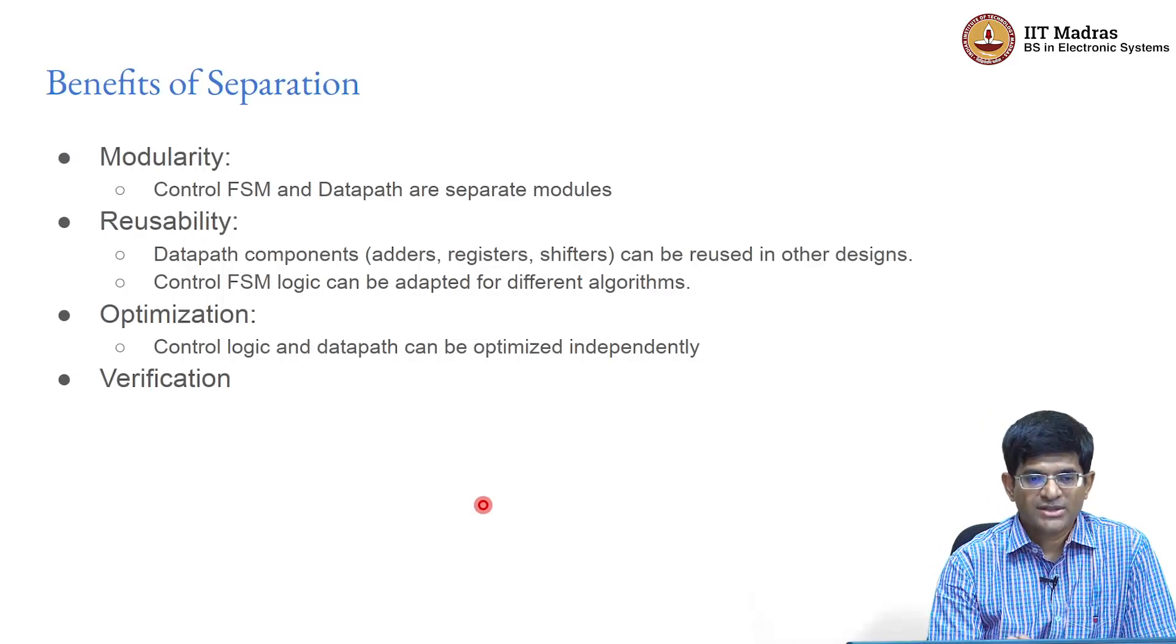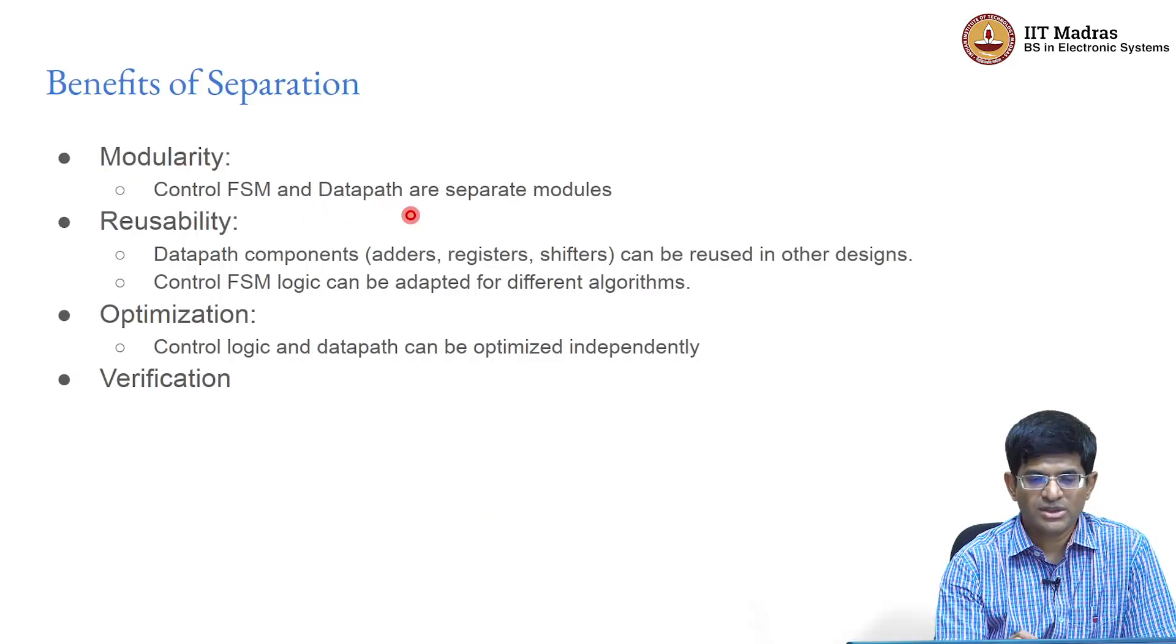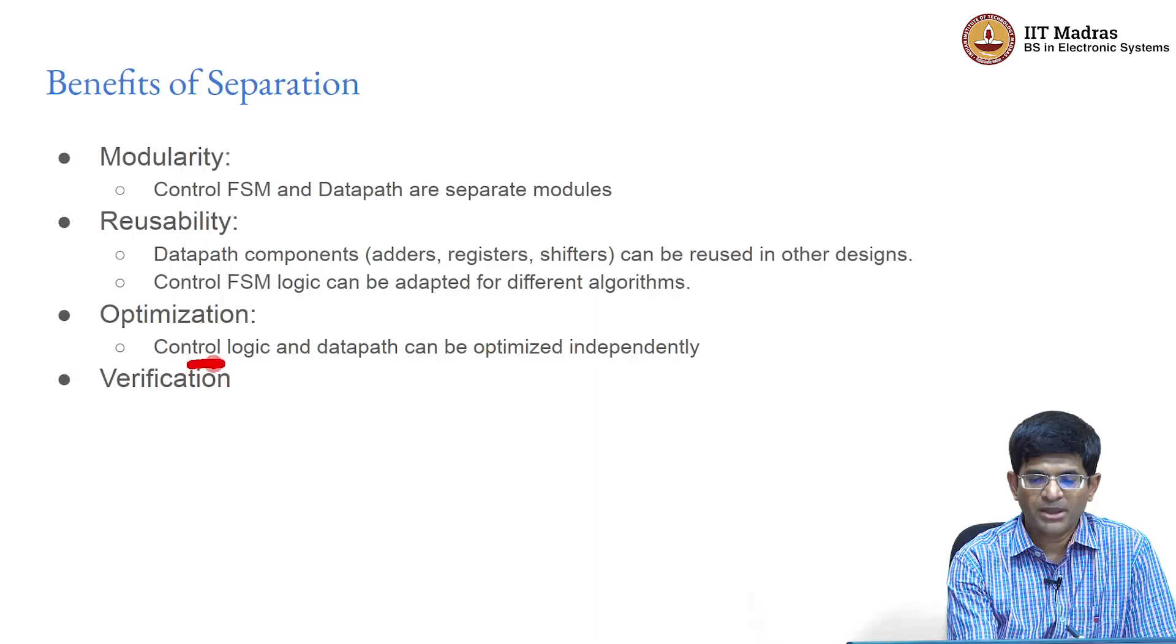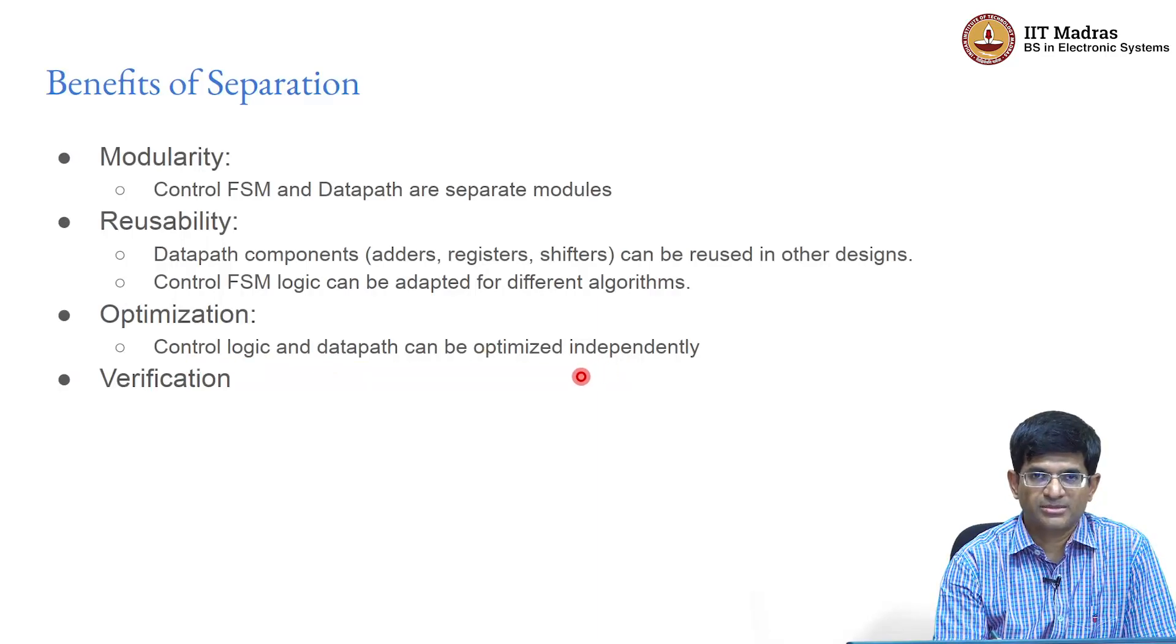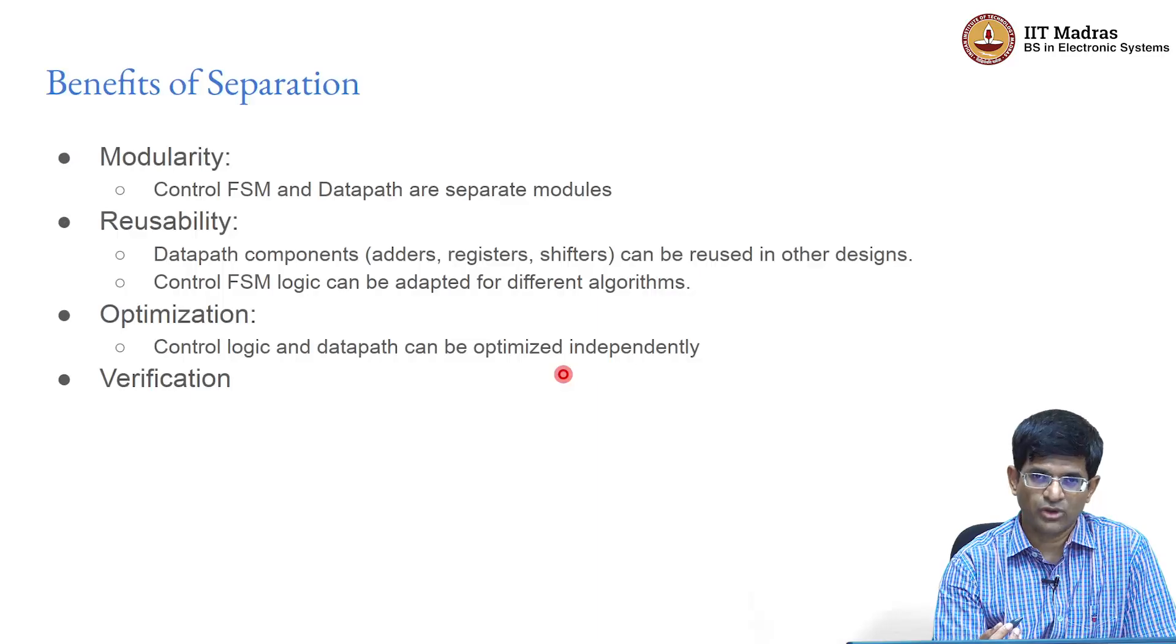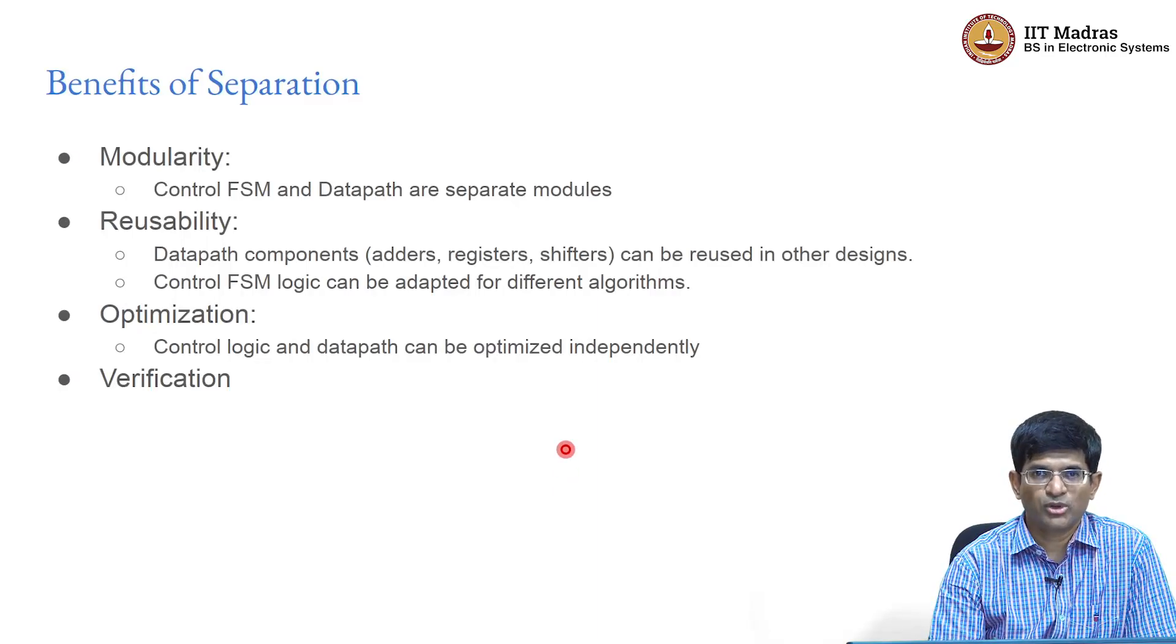We get some benefits of this separation, the separation of concerns. One is modularity - we have a control FSM and data path now as separate modules. Reusability - data path components can be reused in other designs. The control FSM logic could potentially be adapted for different algorithms. And we could optimize each of these independently. That is the best thing. You might find the control logic you want to optimize so that it is one hot encoded so that it runs extremely fast. The data path logic you might decide that you want to do using some kind of an adder which perhaps has a lower power consumption than something that would be built by default. And you could optimize them independently and then combine them back and have correct functionality as well. Same way for the verification - once you have broken them down into separate modules, just like in the case of hierarchical design, we would be able to verify them and then put them together independently.